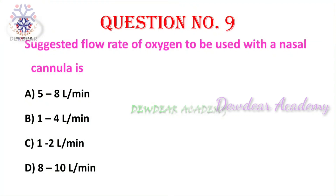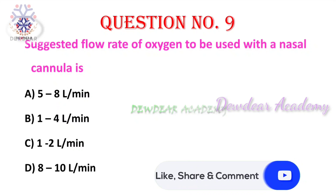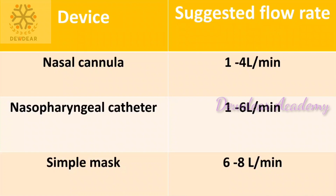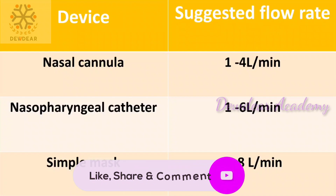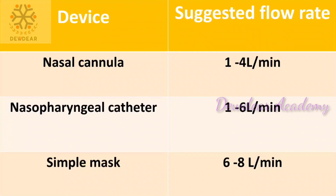Question 9: the suggested flow rate of oxygen to be used with a nasal cannula is — options: 5 to 8 liters per minute, 1 to 4 liters per minute, 1 to 2 liters per minute, 8 to 10 liters per minute. The right answer is 1 to 4 liters per minute. For a nasopharyngeal catheter it is 1 to 6 liters per minute, and for a simple mask it is 6 to 8 liters per minute. These are all low-flow devices.